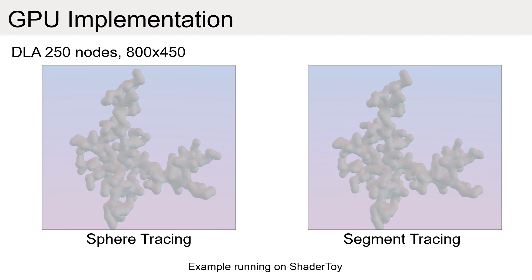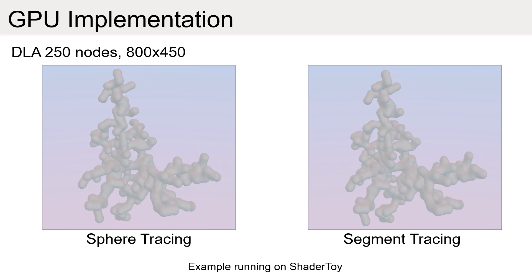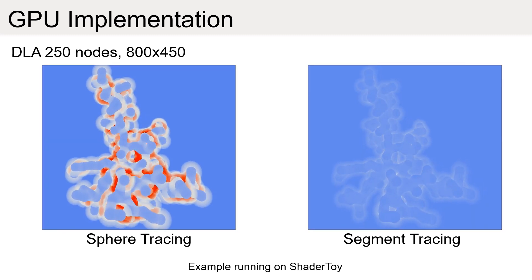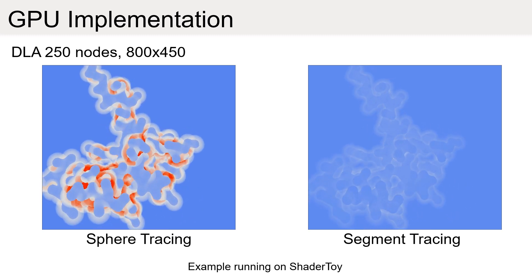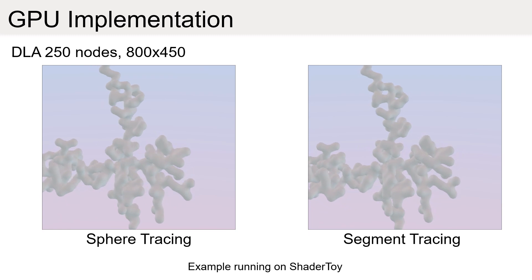Our technique can be implemented on graphics hardware and allows for faster frame rates. In this scene, we blend 250 primitives together and compare standard sphere tracing on the left, and our segment tracing algorithm on the right.